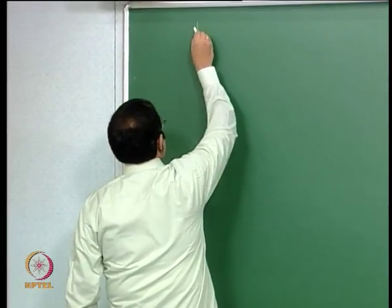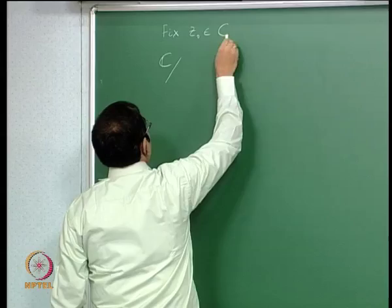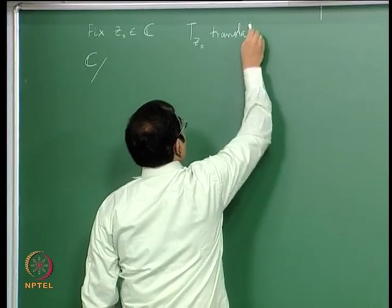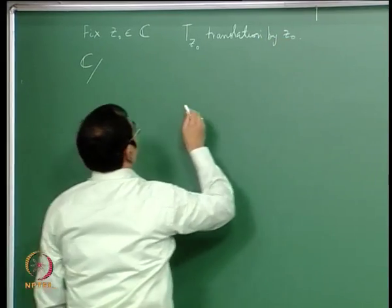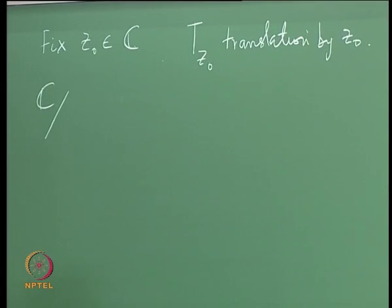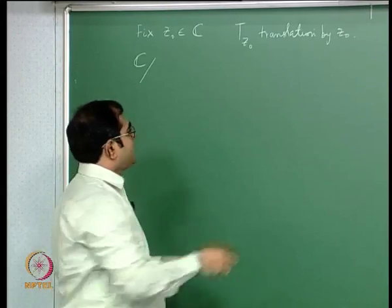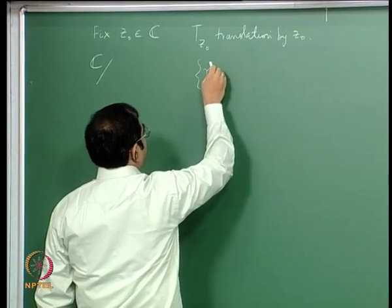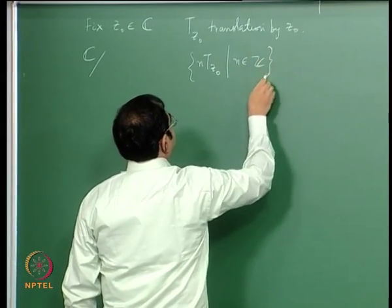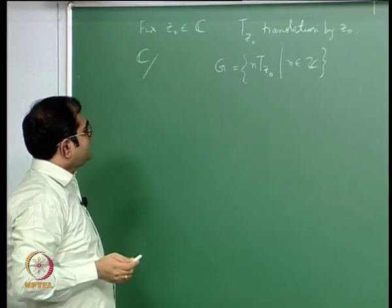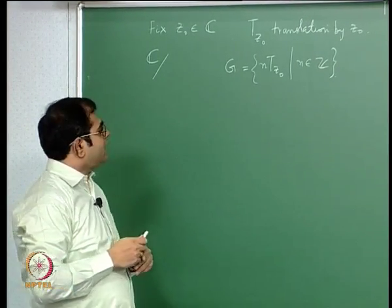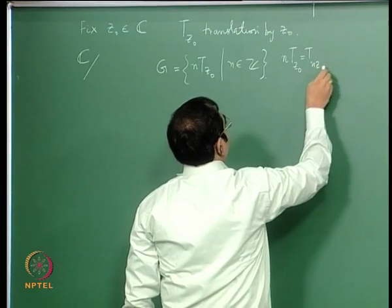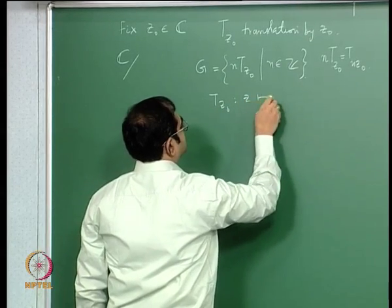We fixed a complex number z₀ and denoted by T_{z₀} the translation by z₀. If you take translations by z₀ and compose two such translations, you get translation by 2z₀. In this way, you get the set of all integer multiples of this translation, namely n times T_{z₀} where n is an integer. This gives a group, and each element of this group is a translation. In fact, n times T_{z₀} is the same as T_{nz₀}, because T_{z₀} is the map z ↦ z + z₀.